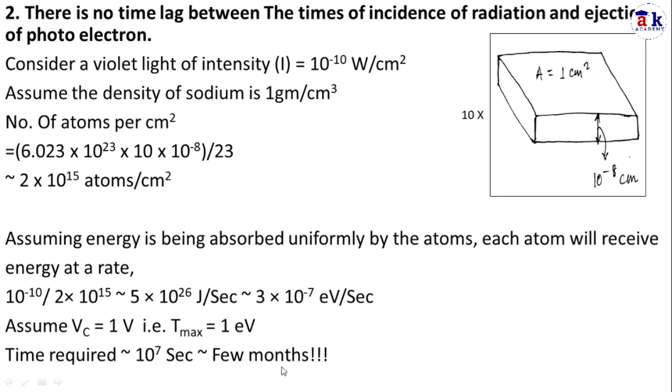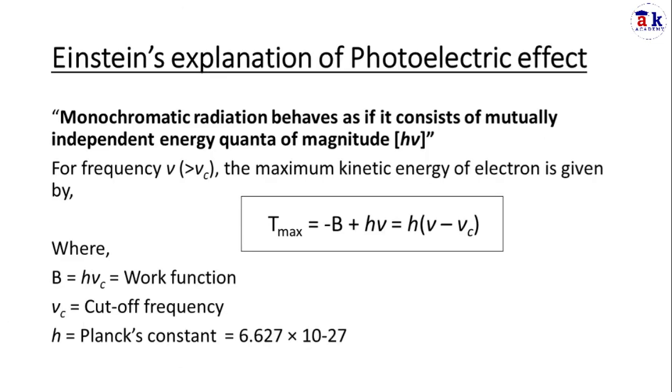Assume the electron's maximum kinetic energy is 1 eV. At the rate energy is being supplied, it will take approximately 10⁷ seconds, which is nearly a few months. So this is a very direct contradiction of our intuition and the physical results. In the experiment there is no time lag between incidence and ejection of photoelectrons, but our calculation shows months.